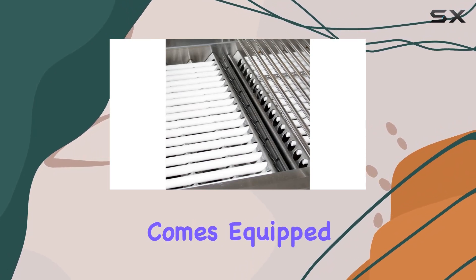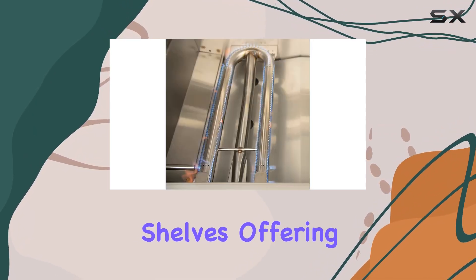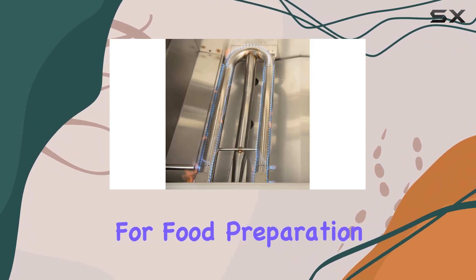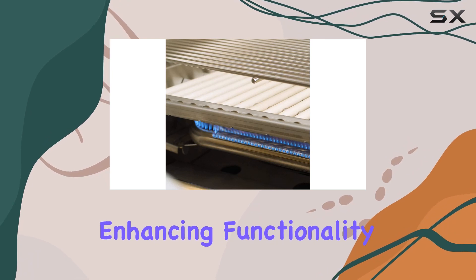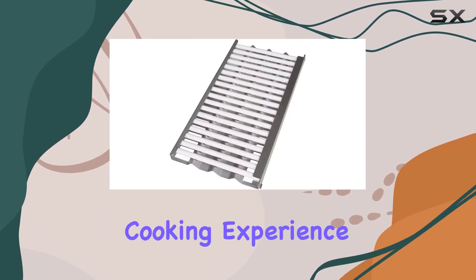Its CSS cart comes equipped with two side shelves, offering additional workspace for food preparation or storage of grilling essentials. The thoughtful design extends beyond aesthetics, enhancing functionality for a seamless cooking experience.